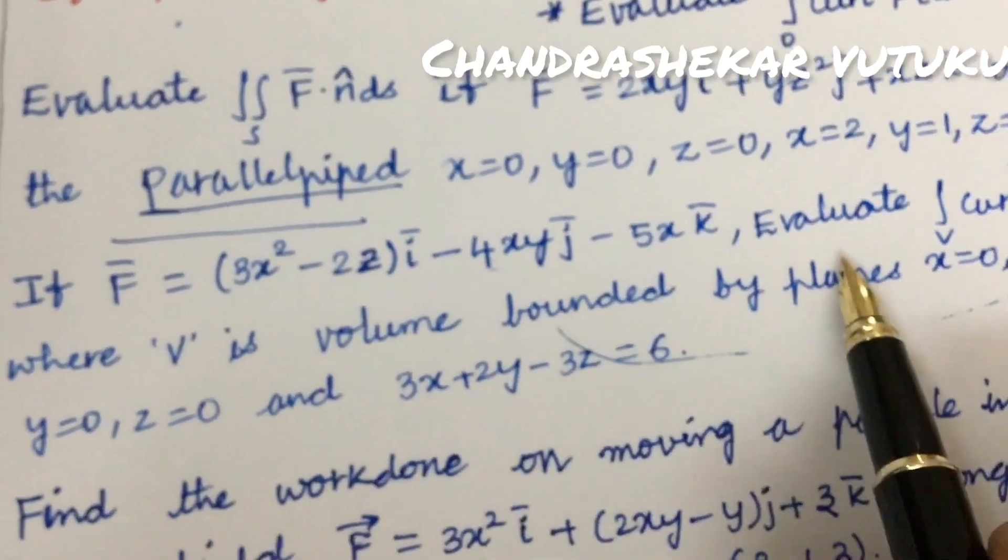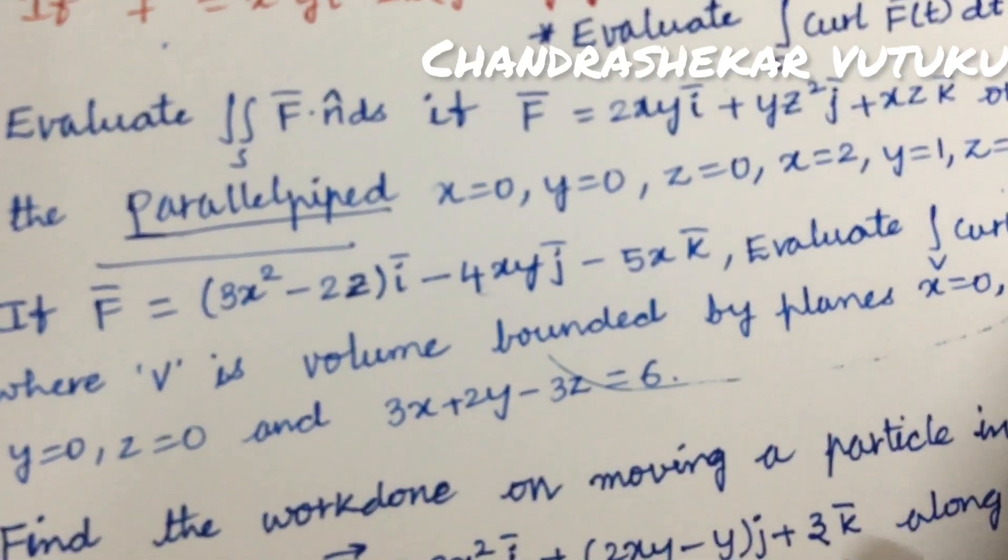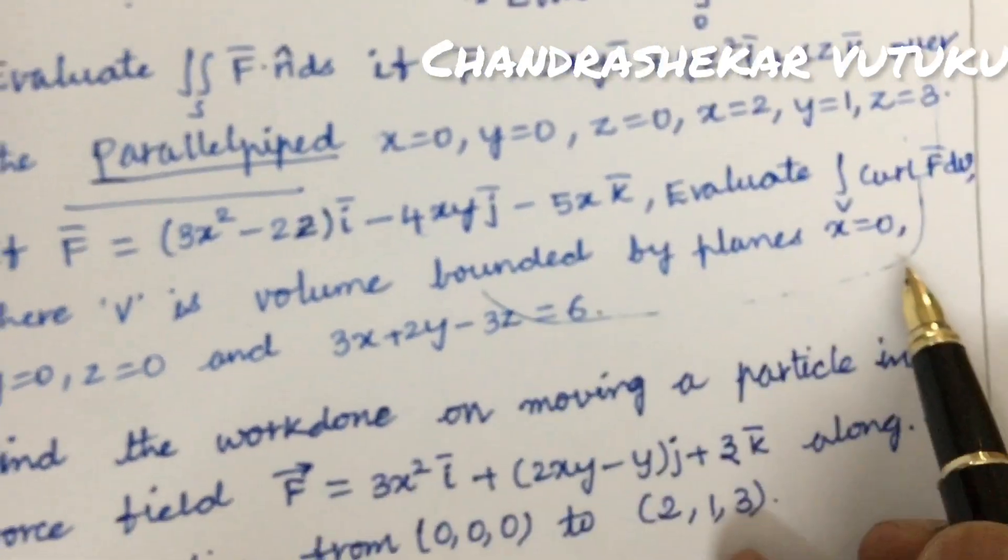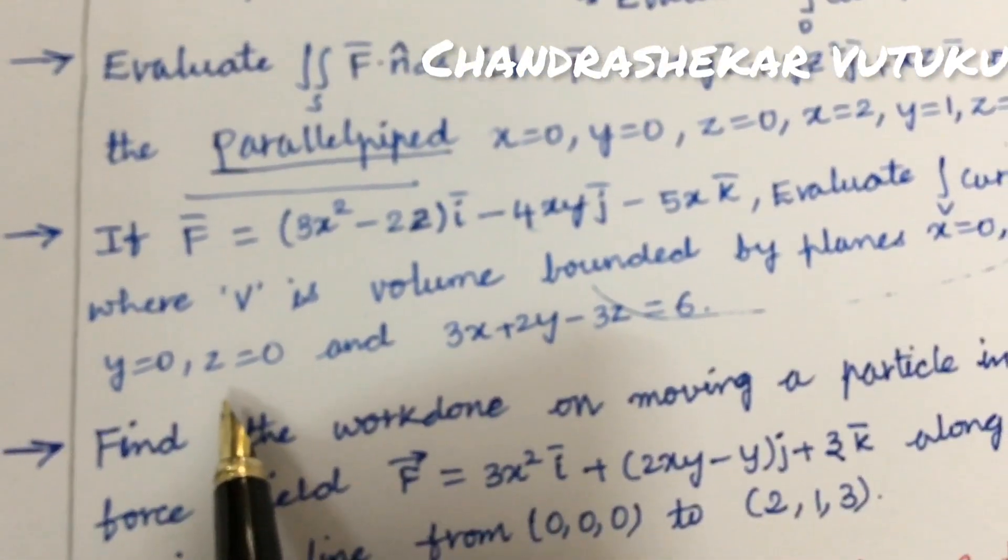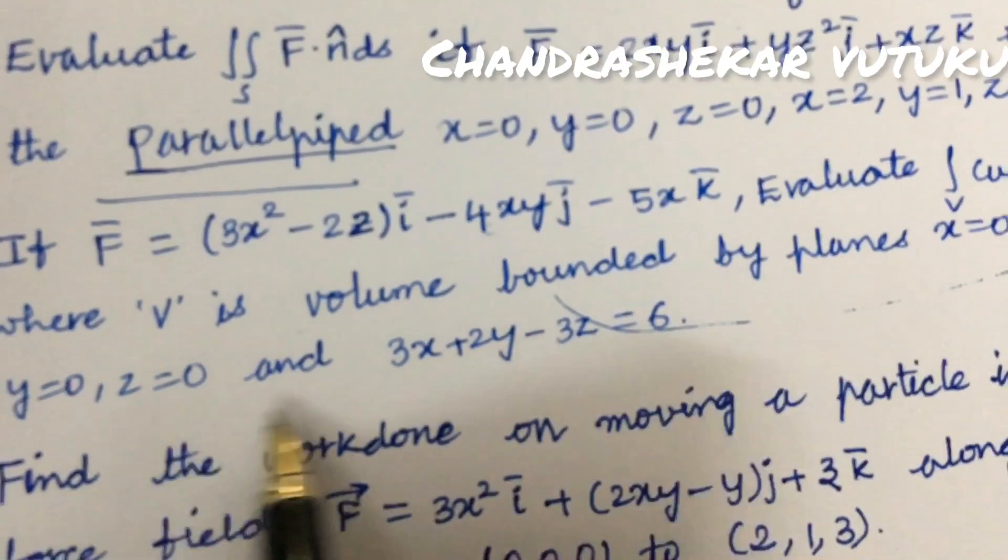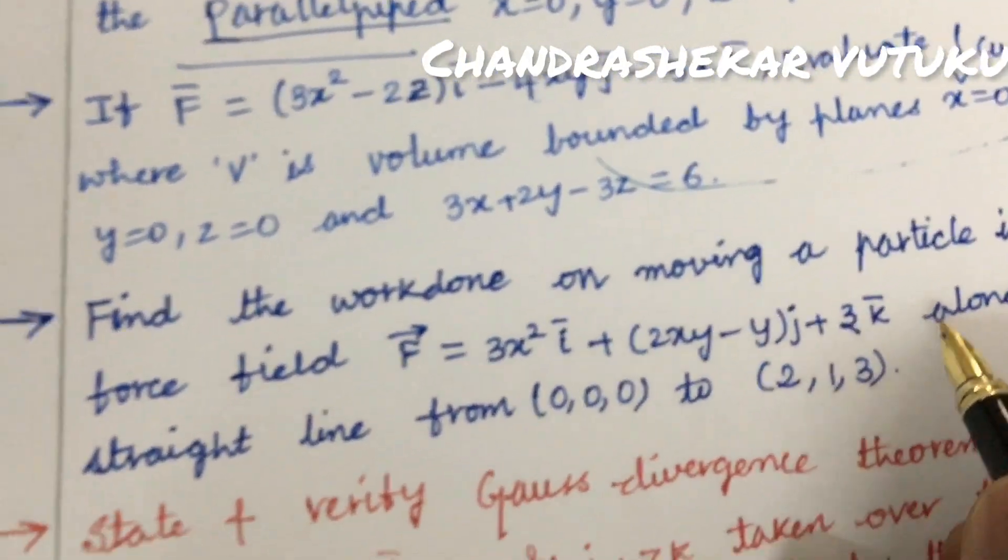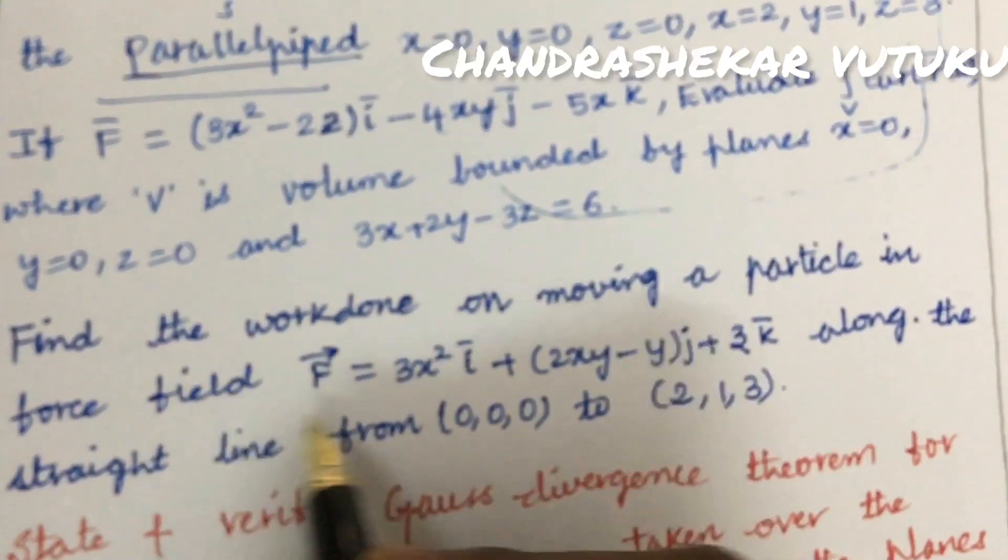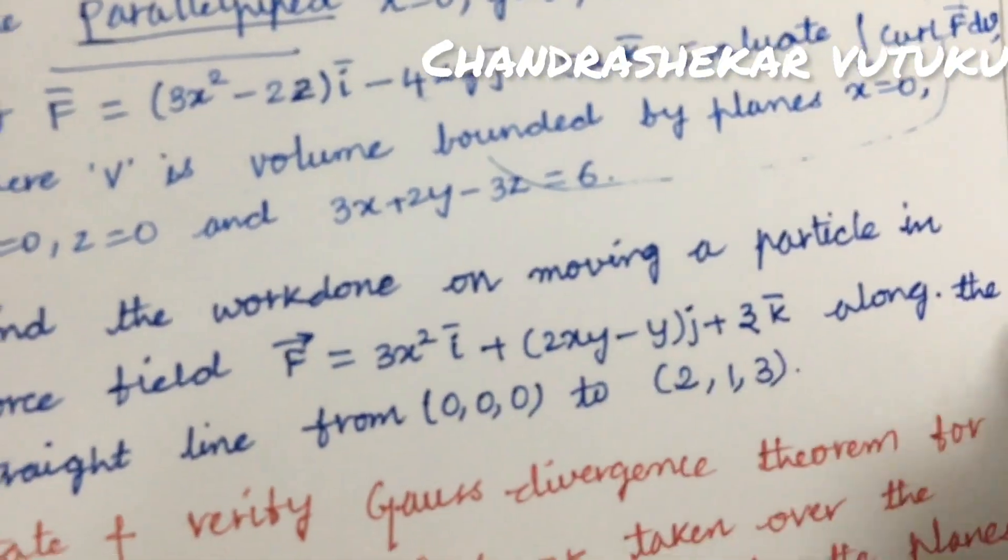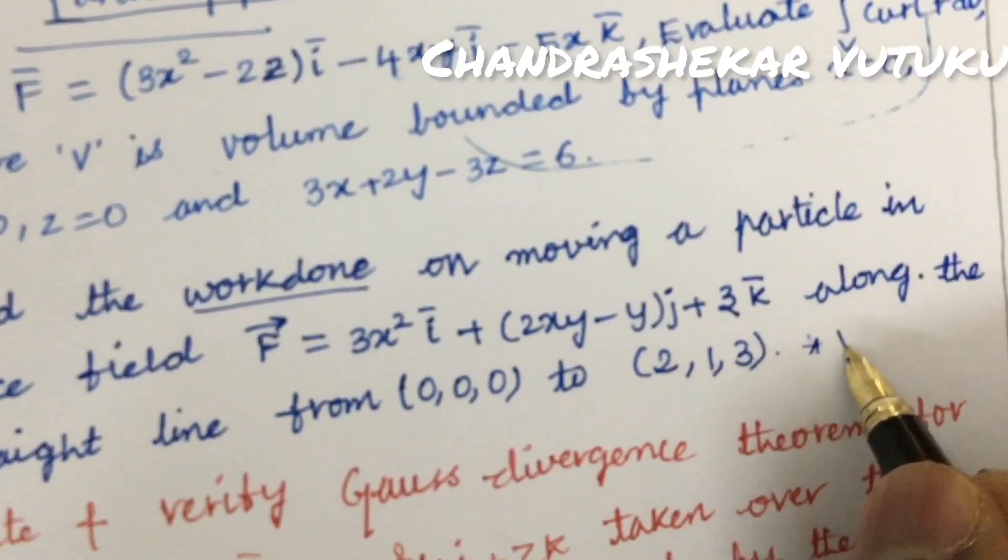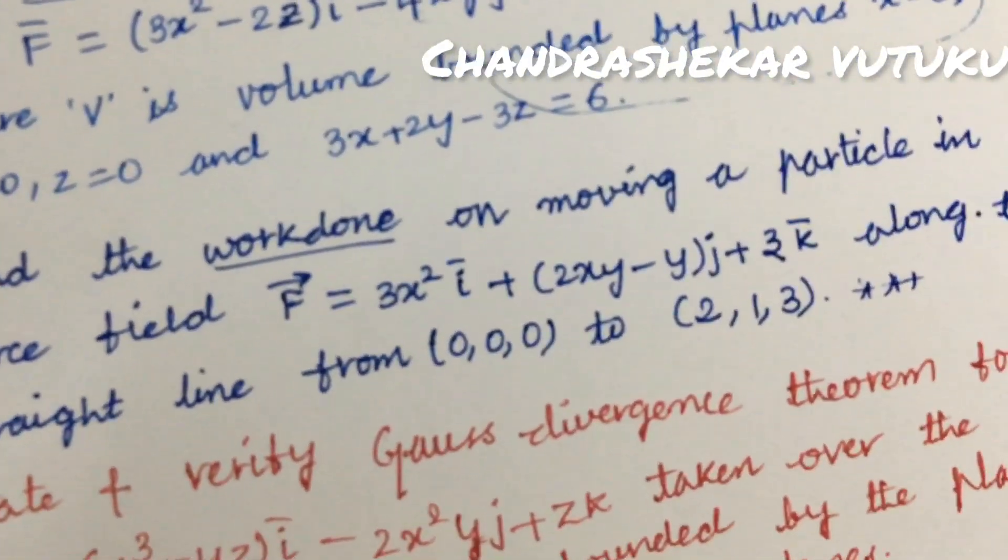If this is the function, evaluate curl f·dv where v is the volume bounded by the planes x = 0, y = 0, z = 0. Find the work done on a moving particle in force field f = 3x²i + ... along the straight line. This is a very important question.